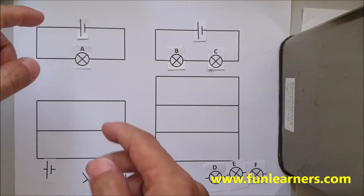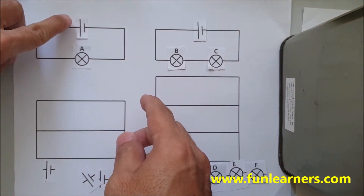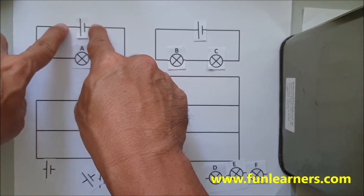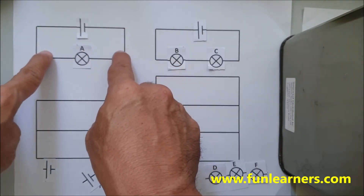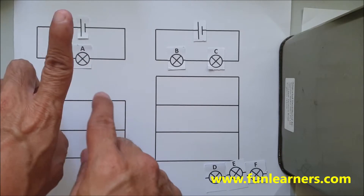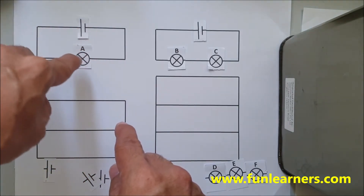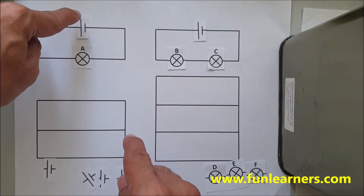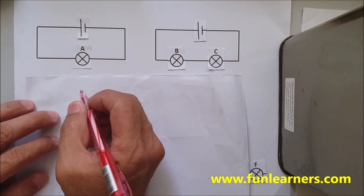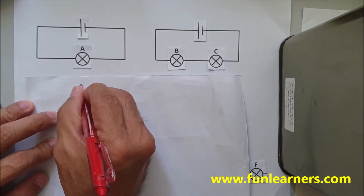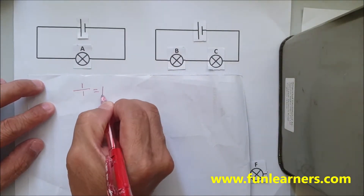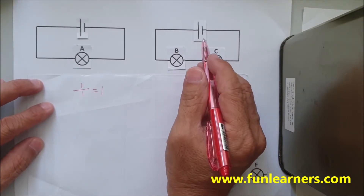First, we look at the number of batteries — one battery. The two ends of the battery encompass this particular light bulb. There is only one light bulb, so for this battery, the brightness will be one divided by one. One battery encompasses one bulb, so the brightness is one.